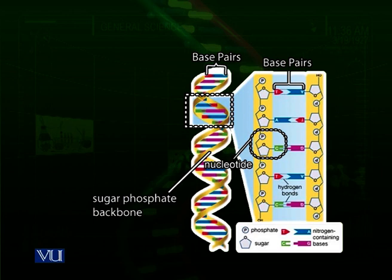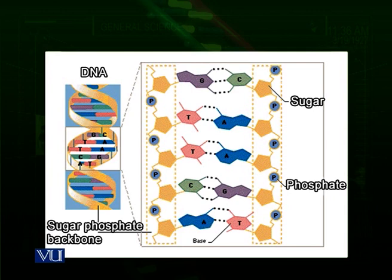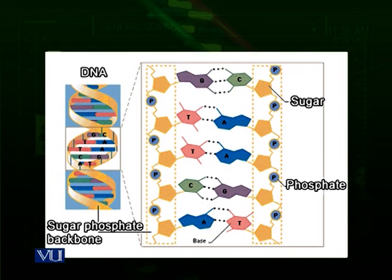The DNA molecule has two parallel chains attached to each other by hydrogen bonding. The G-C pair is attached at three places by three hydrogen bonds, while the A-T pair is attached by two hydrogen bonds. Hydrogen bonding is the force that keeps the two winding strands of DNA together.